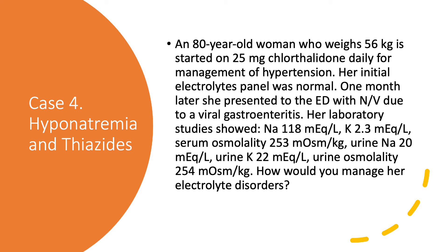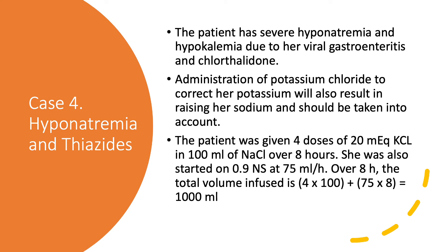Many patients on a thiazide diuretic can have a slightly elevated urine sodium. In this case it is low because this patient is particularly dehydrated and trying to reabsorb sodium. This patient has both severe hyponatremia and hypokalemia due to chlorthalidone, aggravated by viral gastroenteritis. Administration of potassium chloride to correct potassium will raise her sodium the same way as giving sodium. The patient was given four doses of KCl — each 20 mEq — in K-riders of 100 ml of sodium chloride. So 80 mEq of KCl were given over 8 hours at 10 mEq per hour, which is a reasonable rate of correction.